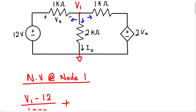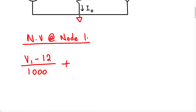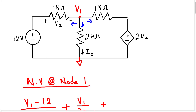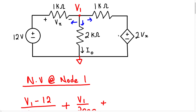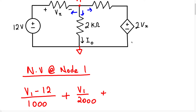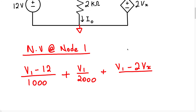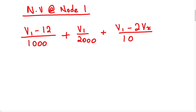Plus, the current in this direction is going to be V1 over 2000. Plus, we're going to have the current flowing through this branch here, which has a voltage source — even though it's a voltage-dependent voltage source, we still treat it as a voltage source. So we have V1 minus 2Vx over 1000, and all of that equals 0.